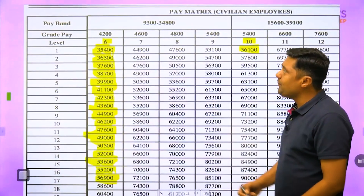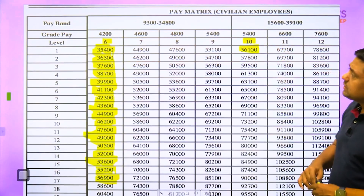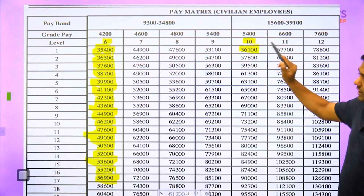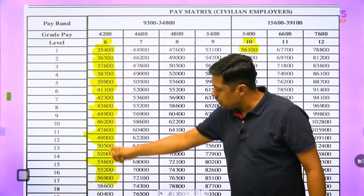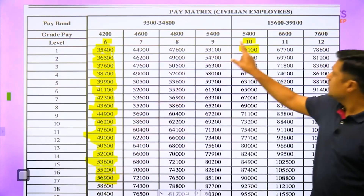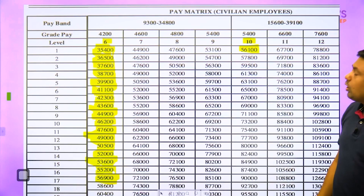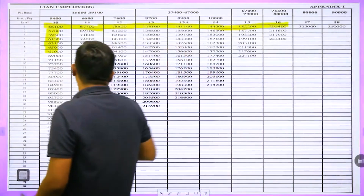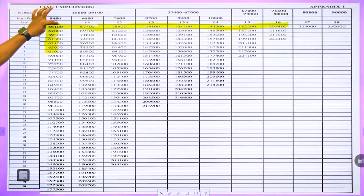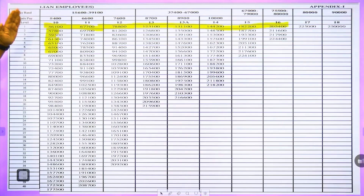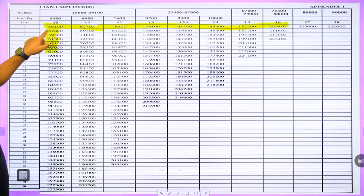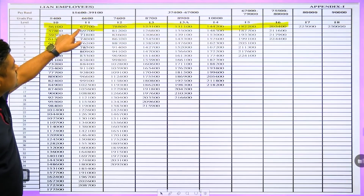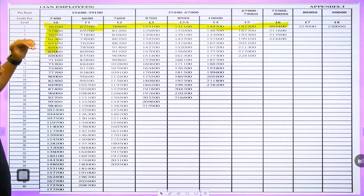Now let's focus on Level 10, or Class A officers. The comparison between Class B officers starting at Level 6 and Class A officers starting at Level 10 is clear — within 16 to 17 years you reach the same basic pay. For Class A officers starting at ₹56,100 at Level 10, every year there is a 3% hike, but with promotion you directly switch from ₹56,100 to ₹67,700 — for example, after three or four years you get that promotion jump.